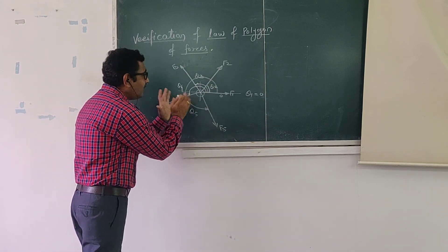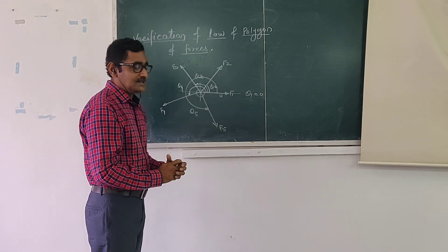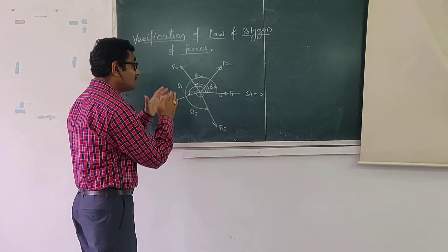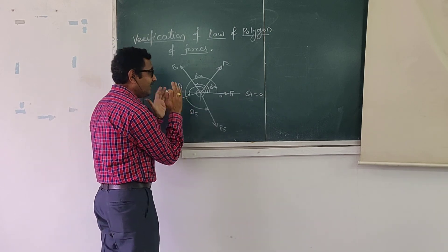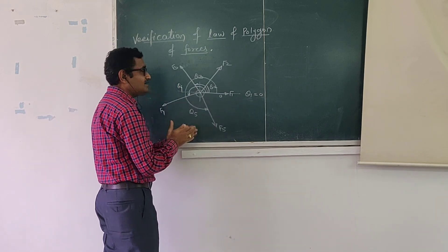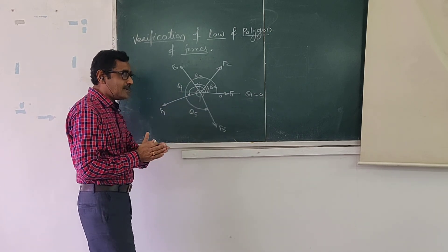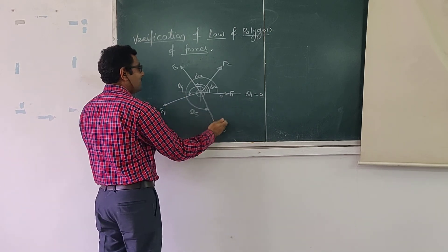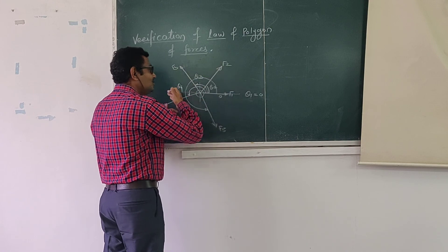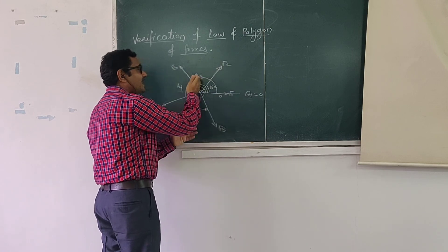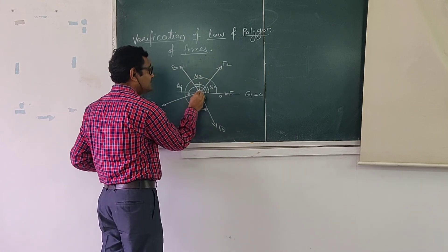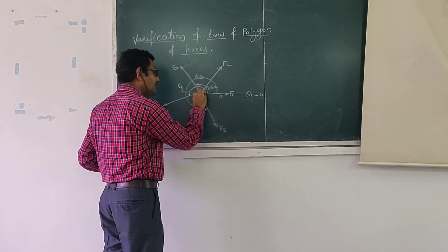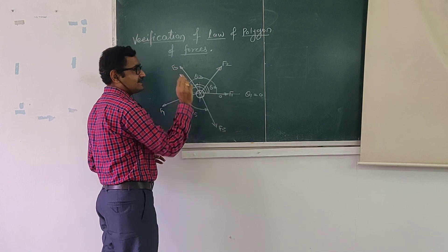So we have to create this force system which will be in equilibrium. To create this system in equilibrium, you have to adjust the magnitude as well as the direction of these forces so that this ring should be exactly at the center.